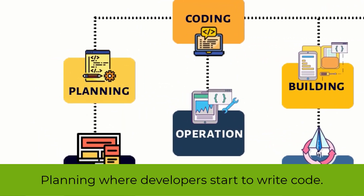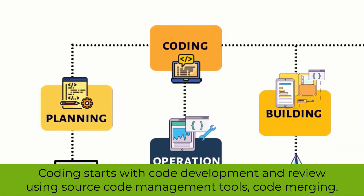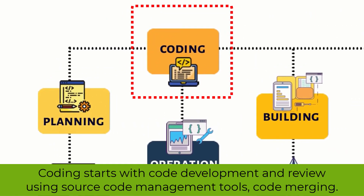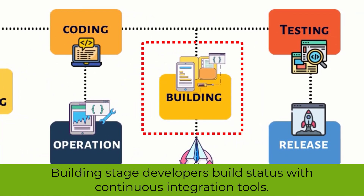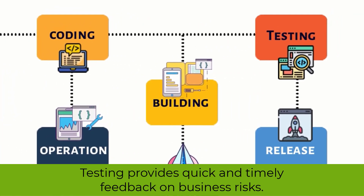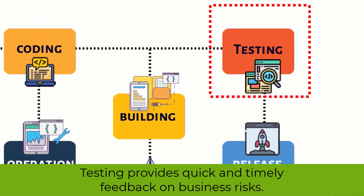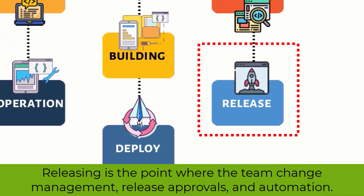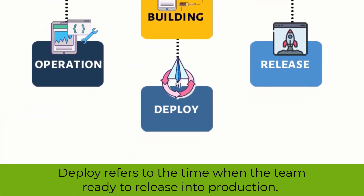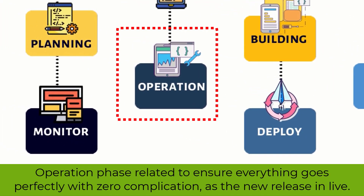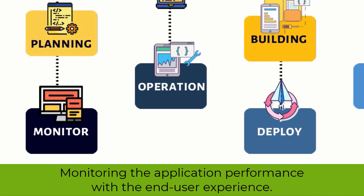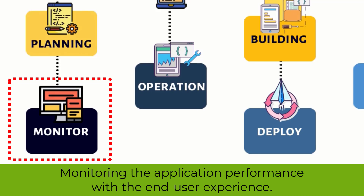Planning, where developers start to write code. Coding starts with code development and review using source code management tools and code merging. Building stage: developers build status with continuous integration tools. Testing provides quick and timely feedback on business risks. Releasing is the point where the team handles change management, release approvals, and automation. Deploy refers to the time when the team is ready to release into production. The operation phase ensures everything goes perfectly with zero complication as the new release goes live. Monitoring covers application performance and the end user experience.